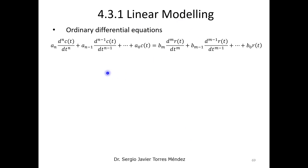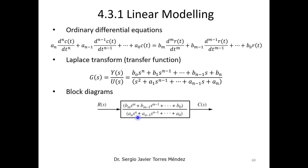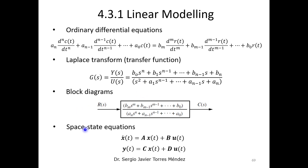For linear modeling, we have four methods to represent a linear equation: ordinary differential equations; the Laplace transform using a transfer function that relates output divided by input; block diagrams as a graphical representation of that relationship; and state-space equations, which use a matrix form to represent the relationship between inputs, outputs, and what we call state variables.